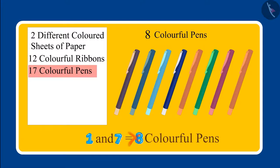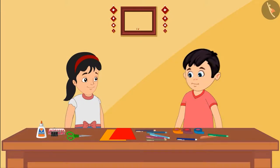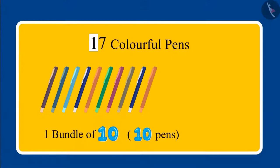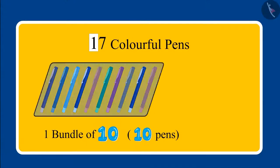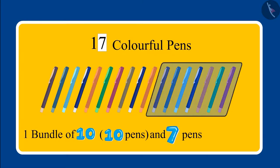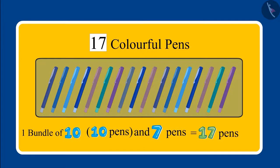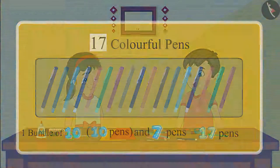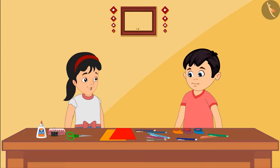Oh I see! Oh no, I read the number of pens also incorrectly. I added one and seven, and that's why I got eight pens. So now can you tell me the correct number of pens? Yes — one means one bundle of ten, and seven means seven more pens, so total seventeen pens. Right Pinky?